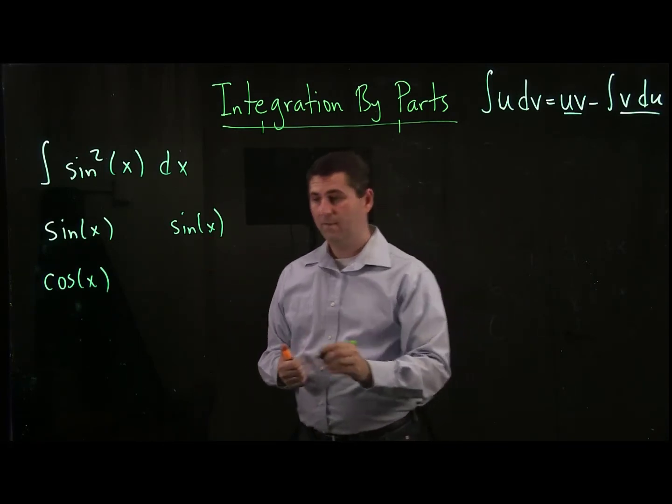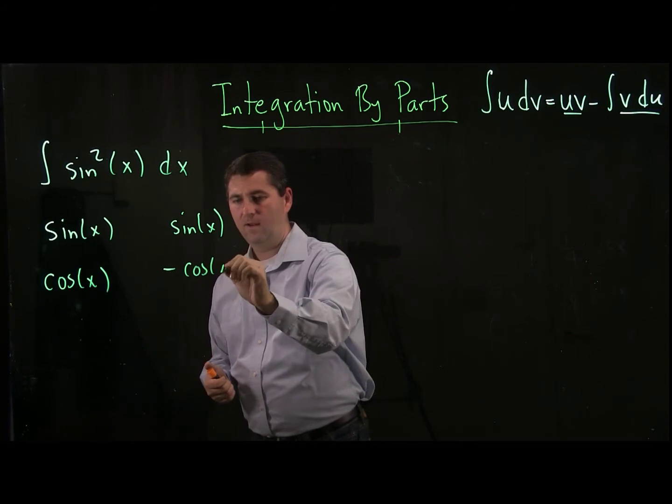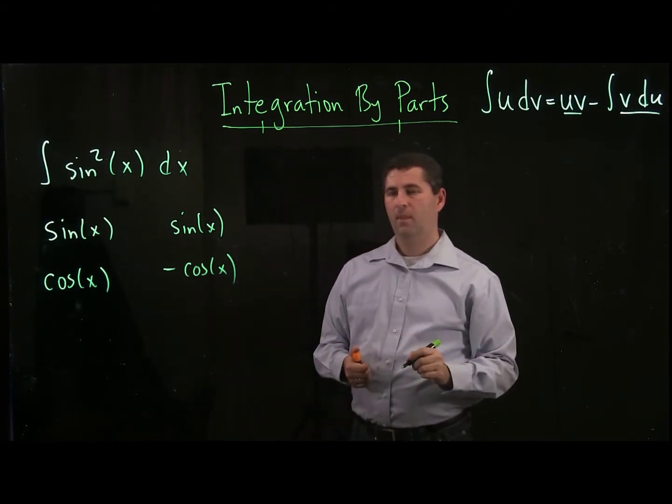That gives me cosine. On the right, I take an antiderivative. Be careful, there's a negative in front of the cosine.